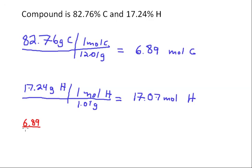6.89 divided by itself will give a value of 1. And then we'll take the 17.07, divide that by 6.89. This works out to be 2.47. I'm going to round that off to 2.5.